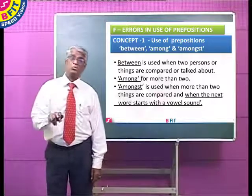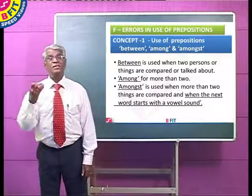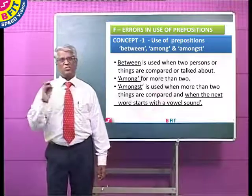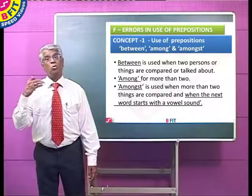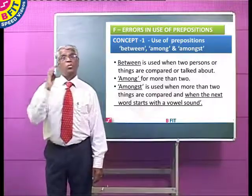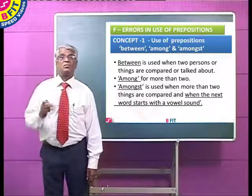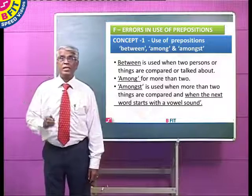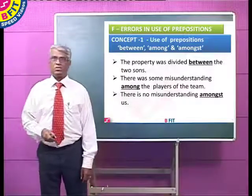There is a third preposition called 'amongst,' which is also used for more than two persons or things, but only when the next word starts with a vowel sound. So we have: between, among, and amongst.